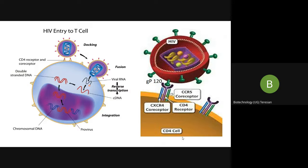Once GP120 comes in contact with the CD4 or T helper cell, it undergoes various modifications so that it can exactly fit into the CD4 receptor. This fitting also requires the help of co-receptors CCR5 and CXCR4. Once it fits, it acts like a lock-and-key method — the CD4 cells of the body are the lock, and the key is with HIV.